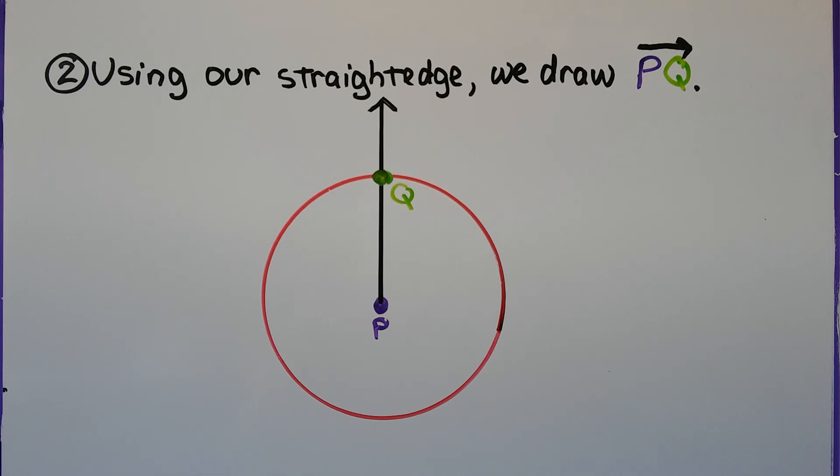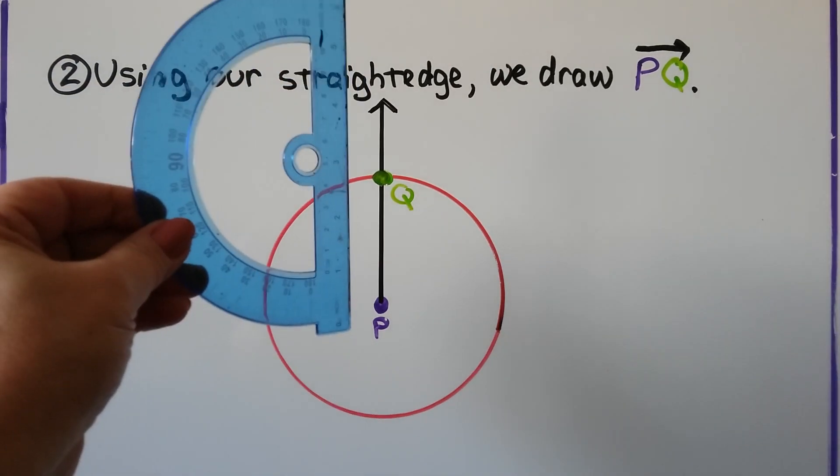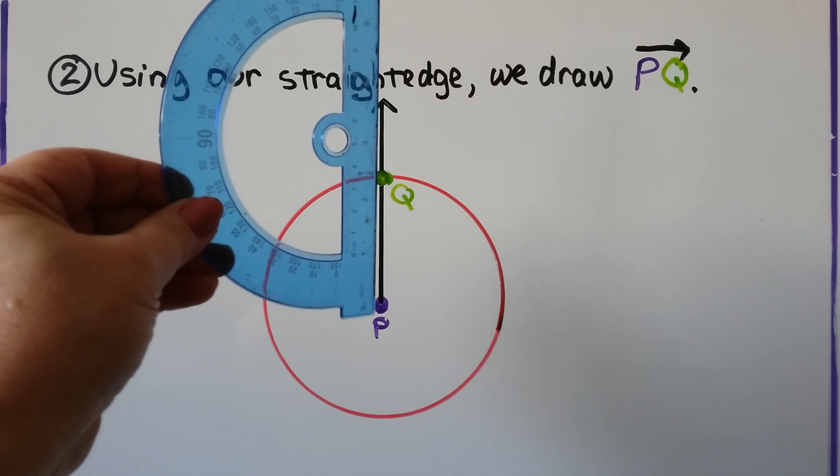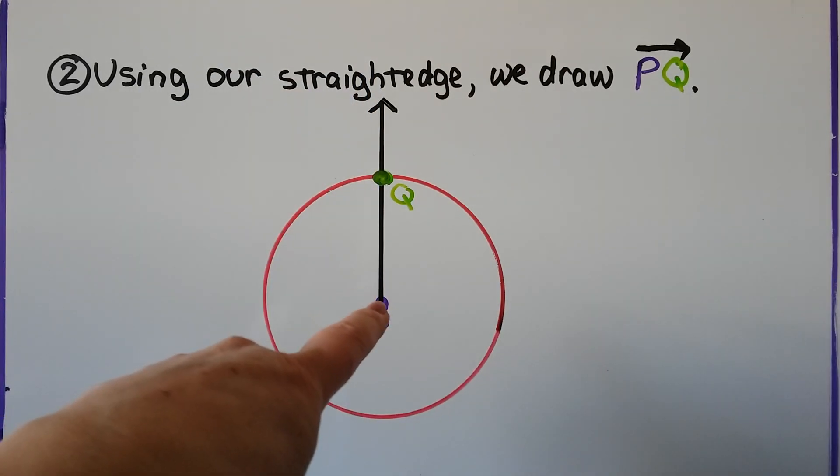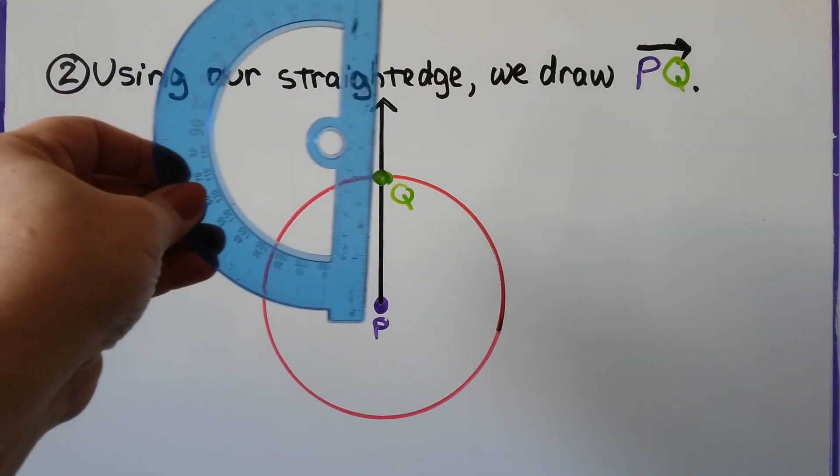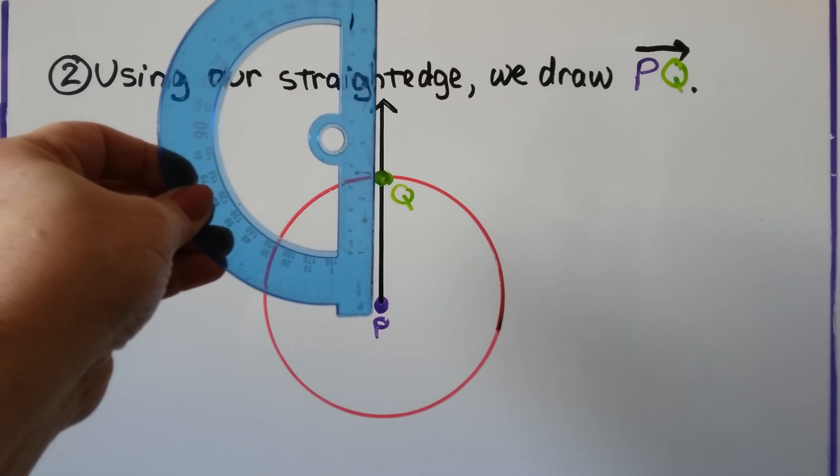The second thing we're going to do is use our straight edge and draw ray PQ from this center point through Q, and we'll draw that ray.